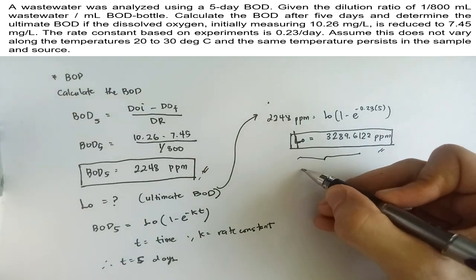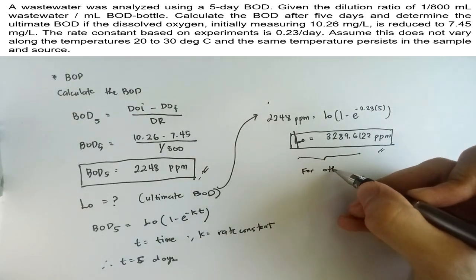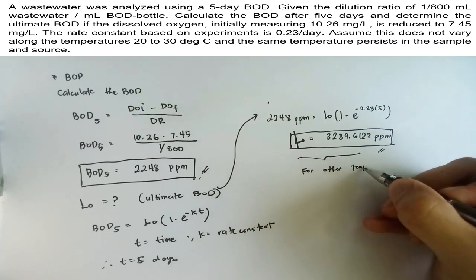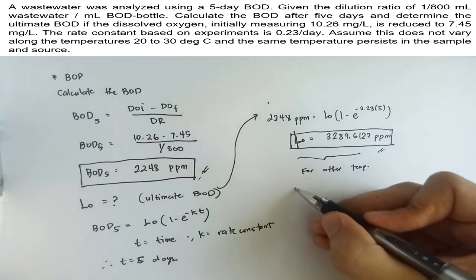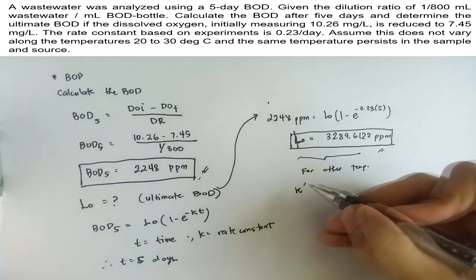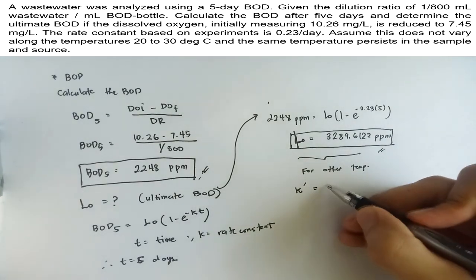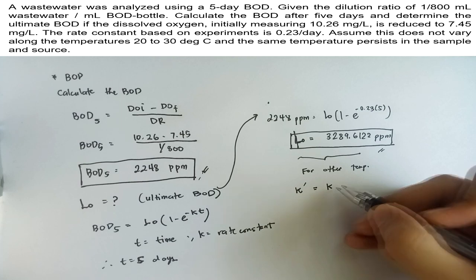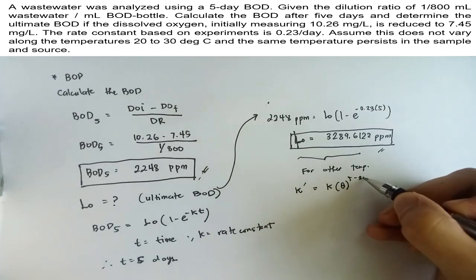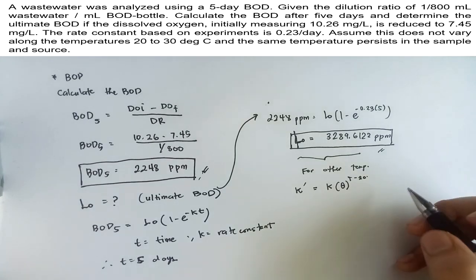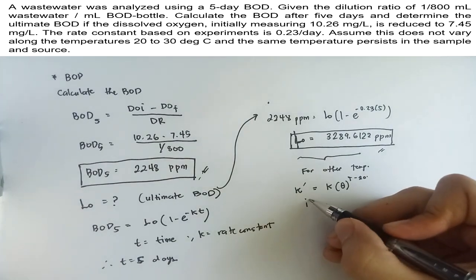If in any case the test is conducted in a different temperature than in the sampling point, then a formula for adjusted rate of constant must be used. Typically, the adjustment for the rate of constant is given by this formula. The new rate of constant is equal to the original rate of constant multiplied with theta raised to the temperature minus 20 degrees Celsius.